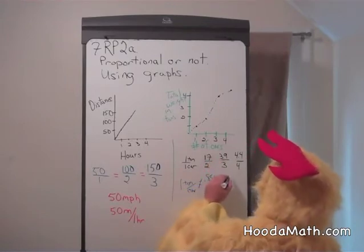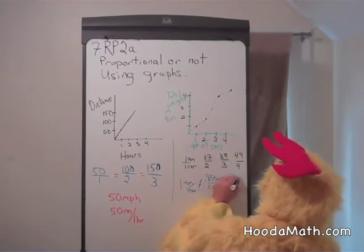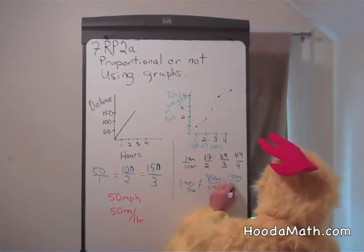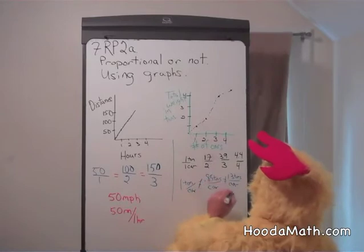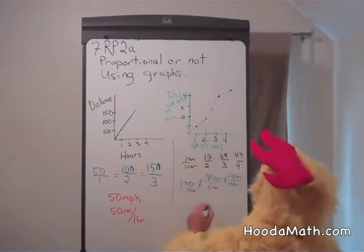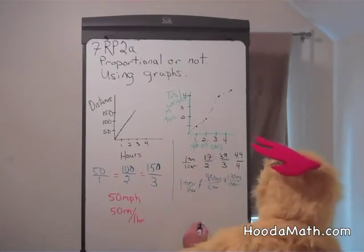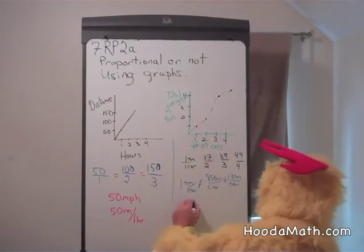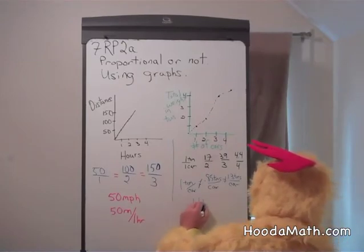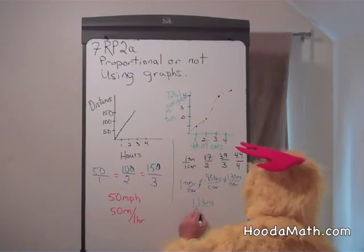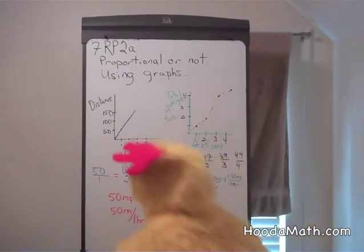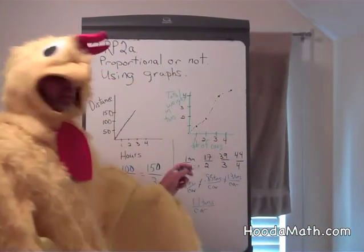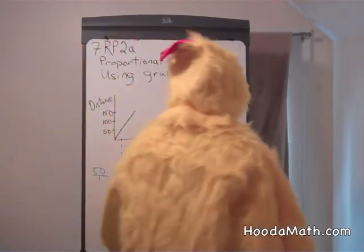Three point nine divided by three is one and three tenths of a ton per car. That's not equal. It's not equal to that one. And four and four tenths divided by four is one point one tons per car as the average weight. These are not proportional. None of them are equal.